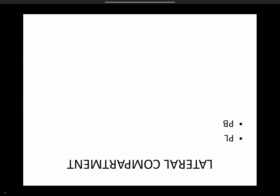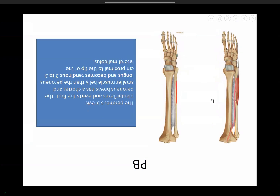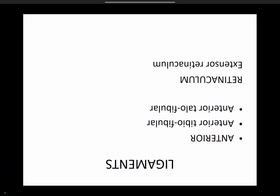Peroneus longus is called longus because it has a very long tendon. It is a bulky muscle with a long slender tendon that passes through the peroneal tuberosity at the calcaneum, then into the sole of the foot through the tunnel of the cuboid bone, and inserts over the base of the first metatarsal and the medial cuneiform. It is an evertor of the foot. Peroneus brevis has a shorter tendon and inserts at the base of the fifth metatarsal.